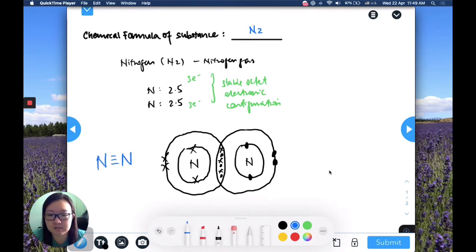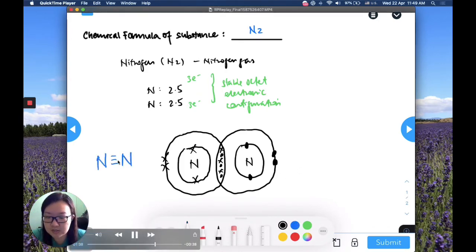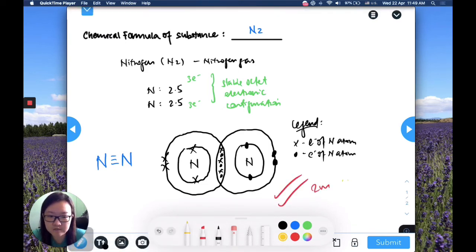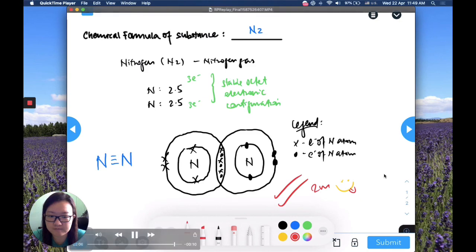So here you can see that nitrogen N2 has a triple covalent bond because there's three pairs of electrons being shared. Then again, you need to put in your legend. But in this case it's a little bit more straightforward because it's the same type of atoms. So this is a full two mark answer, smiley face, this is a good answer. You can press submit.